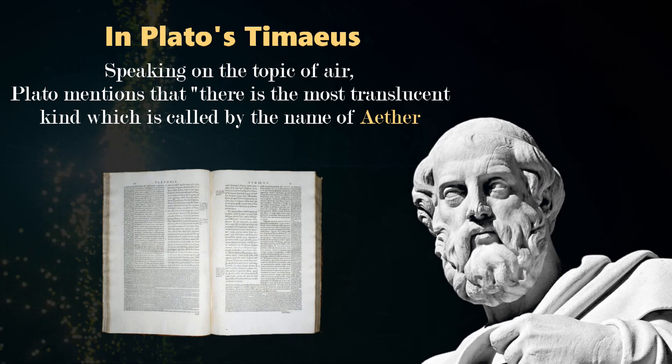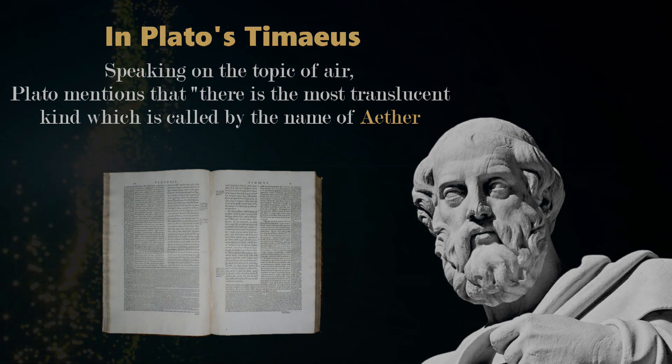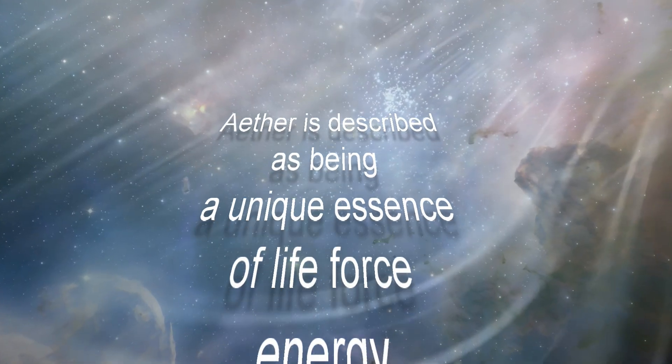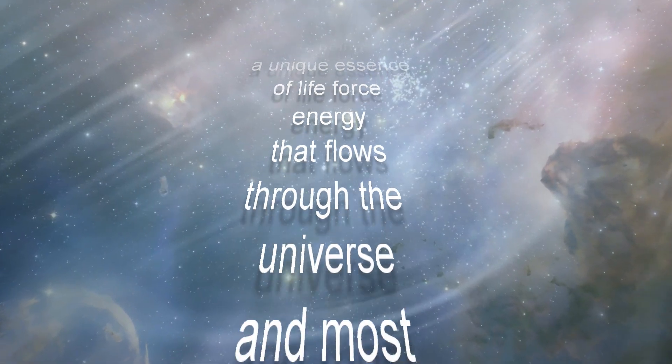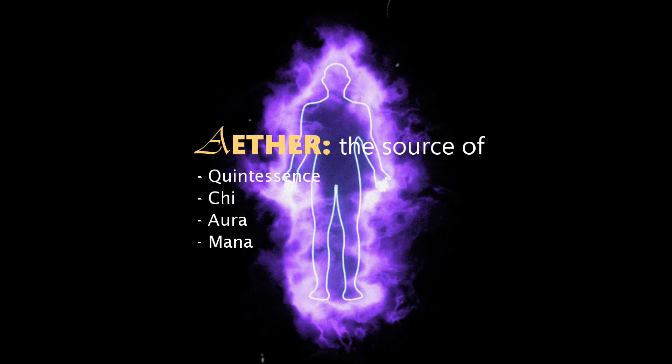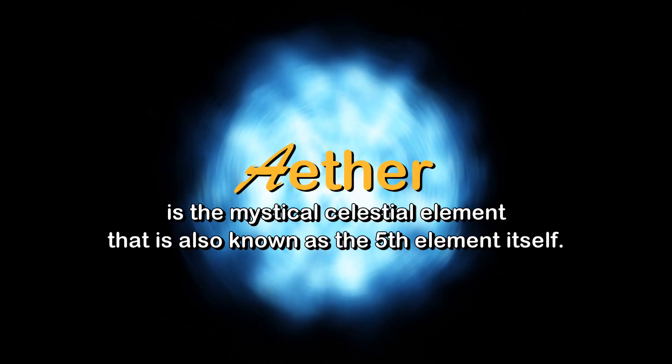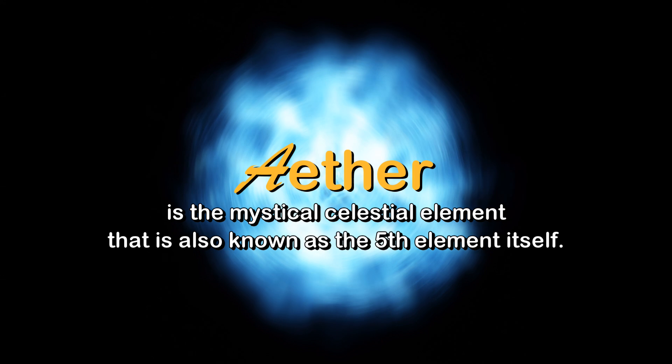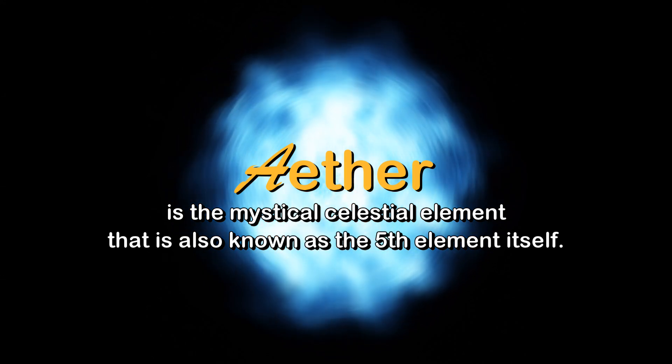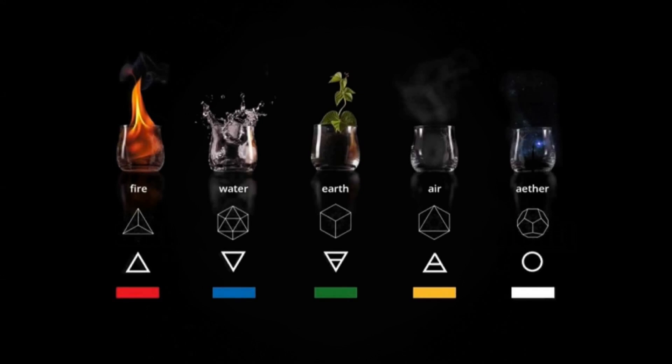In Plato's Timaeus, speaking on the topic of air, Plato mentions that there is the most translucent kind, which is called by the name of ether. Ether is described as being a unique essence of life force energy that flows through the universe, and most of existence, the source of quintessence, chi, aura, and manna. It is the mystical celestial element that is also known as the fifth element itself. Fire, water, air, earth, and ether.